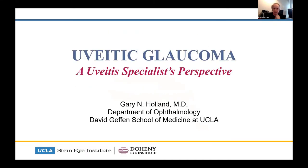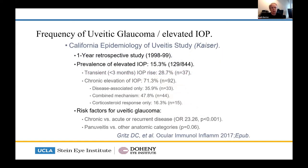These are Gary Holland's slides — he's a giant in the field of uveitis, the person who as a medical student discovered, recognized, characterized, and described CMV retinitis in AIDS in Los Angeles in the early 1980s. There are very few decent epidemiological studies of uveitis and uveitic glaucoma. This Kaiser Permanente study looked at the prevalence of IOP elevation in uveitis, and it seems to be about 15% across the board.